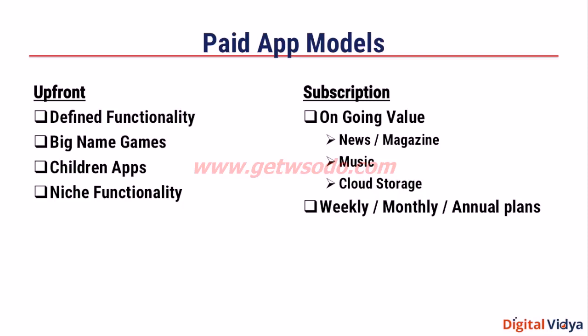Within the paid apps model, there are two broad types. One is where you're paying upfront for an app, which means that even before you install the app, you have to pay for it. This model works great for apps that have a certain defined functionality, such as a big-name game, a children's app, or an app with niche functionality — for example, a music equalizer app. On the other hand, you have apps that offer subscription-based pricing, which means they charge the user on a weekly, monthly, or annual basis. These apps offer ongoing value to the user, meaning they have either new content, new functionality, or they are offering an ongoing service.